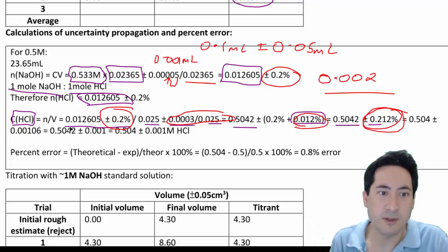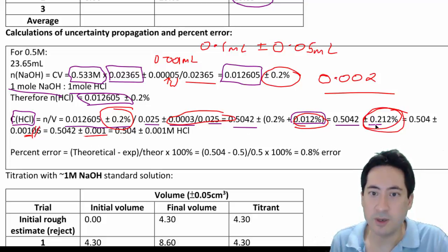Now uncertainties are always given to one significant figure. So I need to just go down to the most sig fig, get rid of those. And so that's my final raw uncertainty. This is my final percentage uncertainty. But when you give final answers, you need to give an actual value.